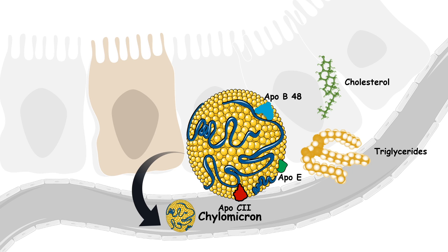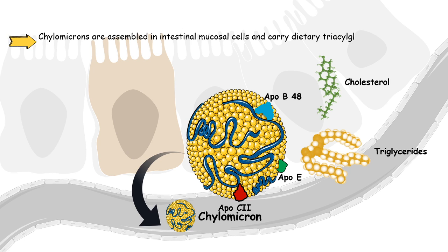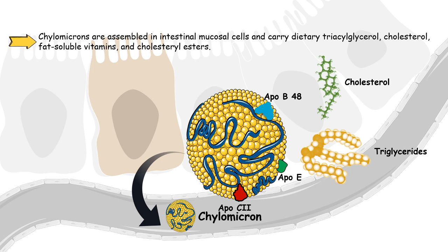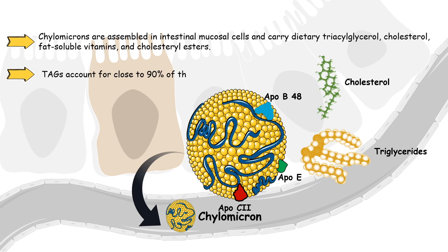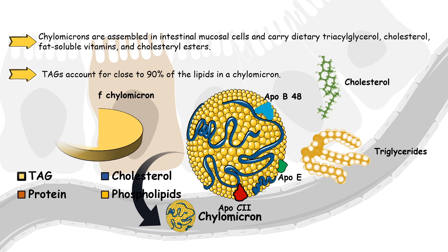The intestinal epithelial cell secretes chylomicron which is enriched in triglycerides. Other than triglyceride, it has cholesterol, Apo B48, Apo E, and apolipoprotein C2 — all of these are components of chylomicron. Chylomicrons are exclusively assembled in the intestinal mucosal cell. Most importantly, the triglycerides and cholesterol in chylomicron are coming from our diet, and triglyceride accounts for 90% of the volume of the chylomicron.